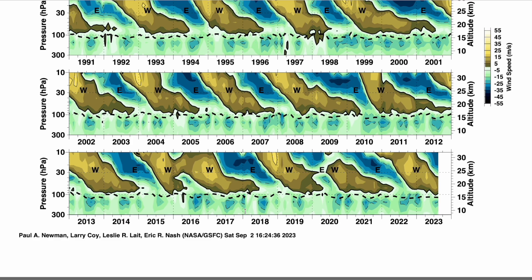From all the data, this would follow on from the last few winter updates in suggesting perhaps more blocked and colder, drier weather. However, an easterly QBO doesn't guarantee a cold winter. For example, in 2018 we were in an easterly descending QBO, and we did see a sudden stratospheric warming and the Beast from the East. That's a fairly standard outcome — the easterly QBO probably contributed to that stratospheric warming. You can see a very strong easterly QBO back then, very similar to what we're seeing now.